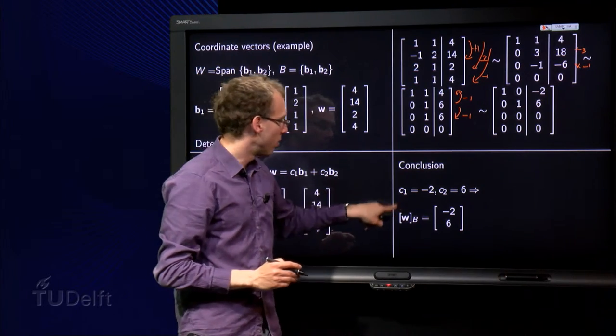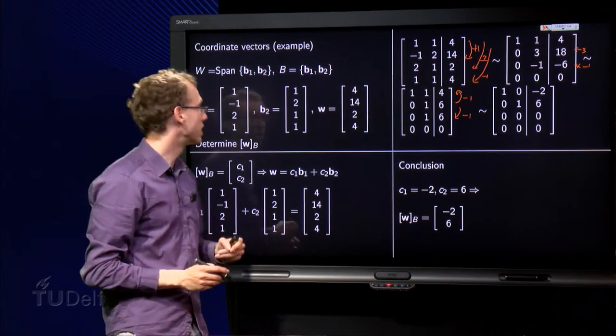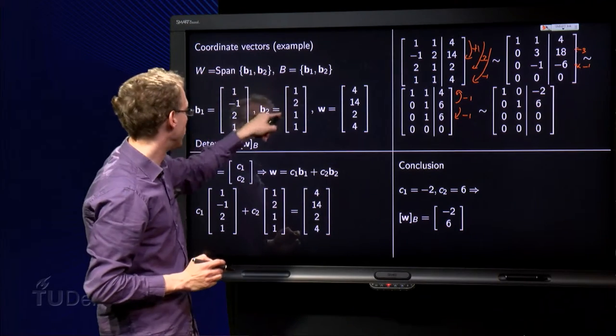There we are. So we have our coordinate vector consisting of c1 and c2: minus 2 and 6. Check, of course.